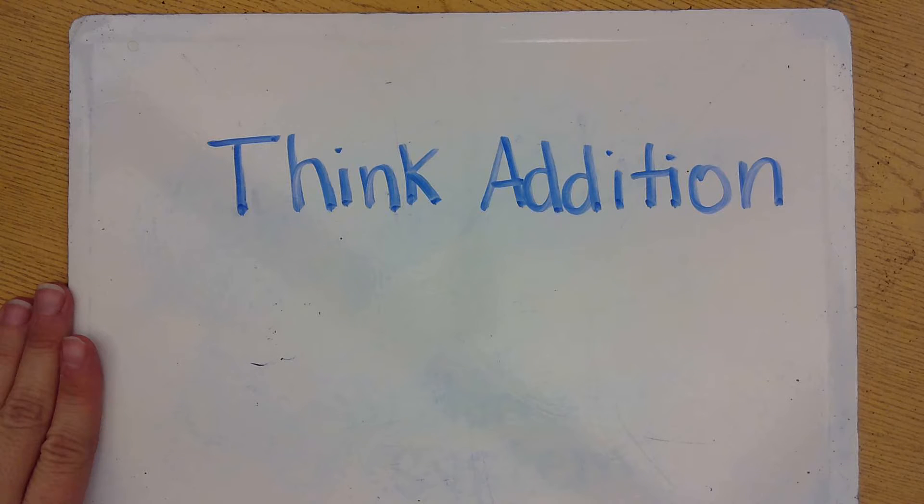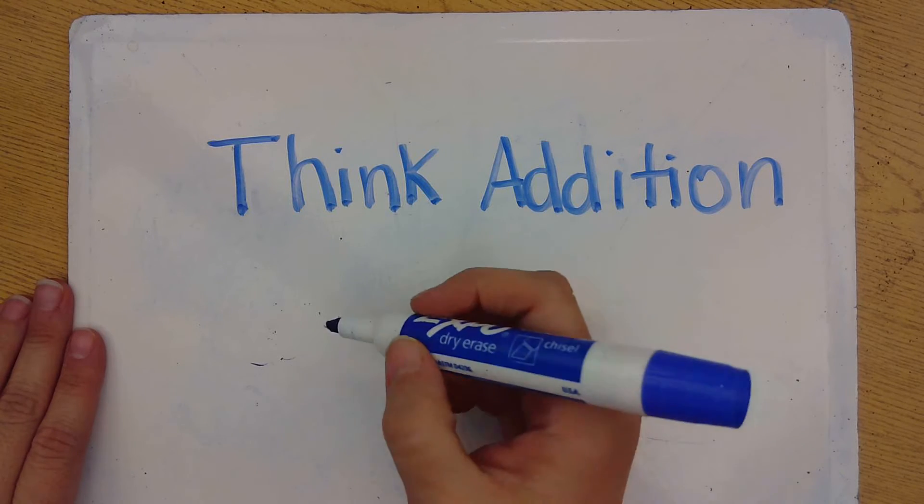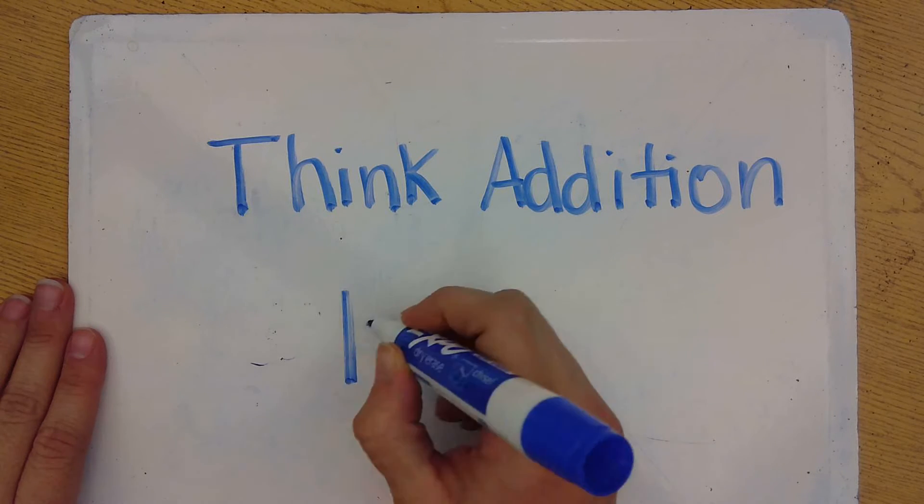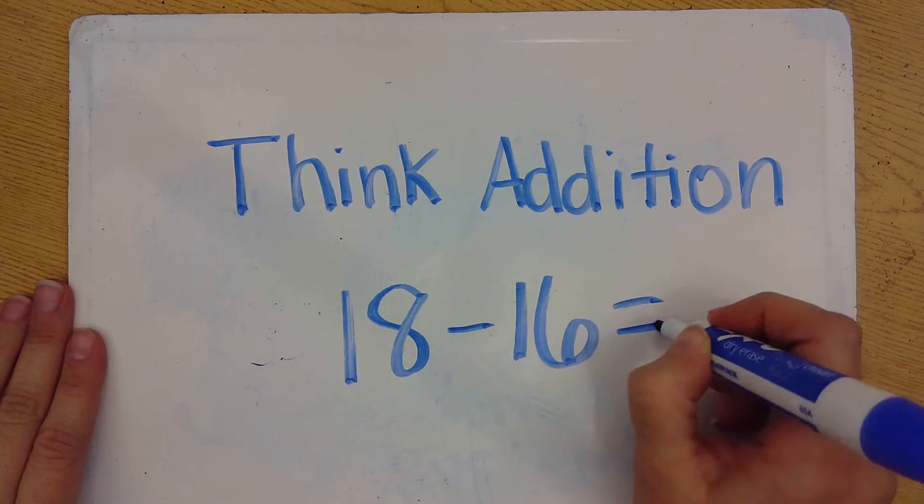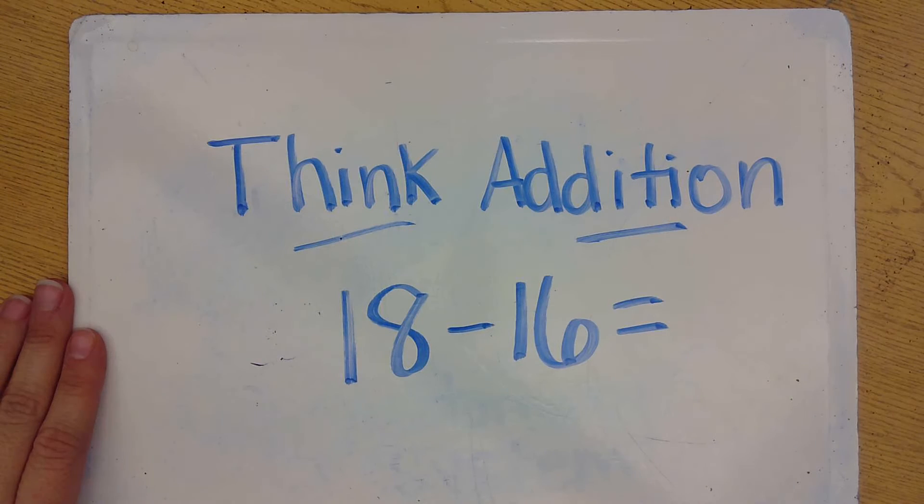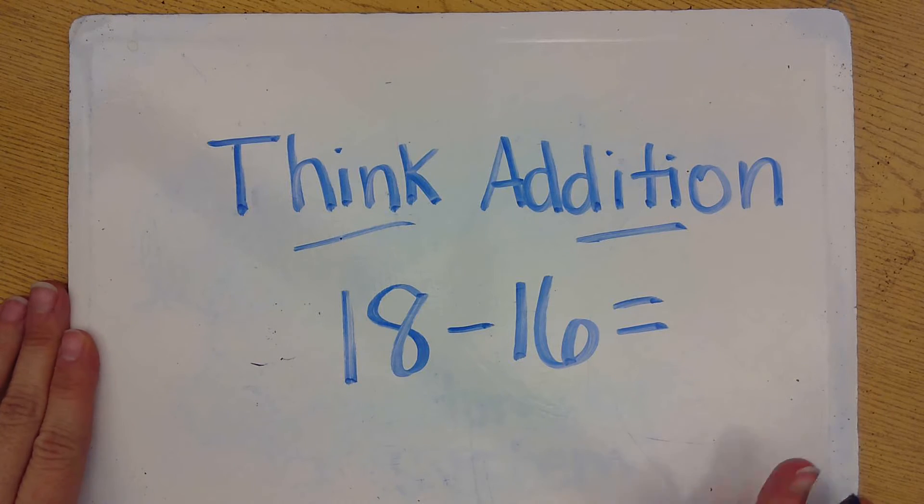One subtraction strategy that we use quite a bit in second grade is the think addition strategy. And when we think addition, we want to subtract, but we want to think about addition to help us subtract. So for example, if you have 18 minus 16, we would probably use this think addition strategy to help us get the answer.